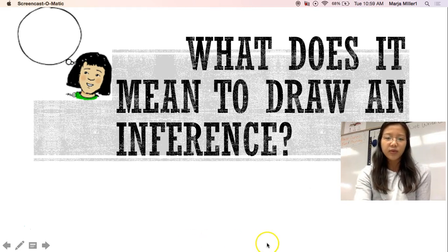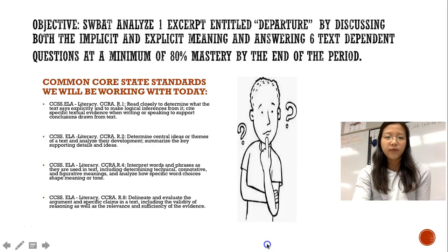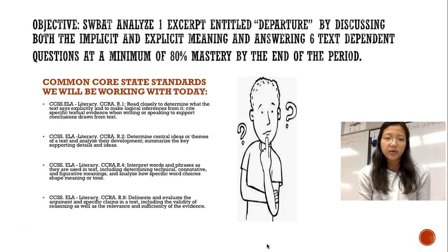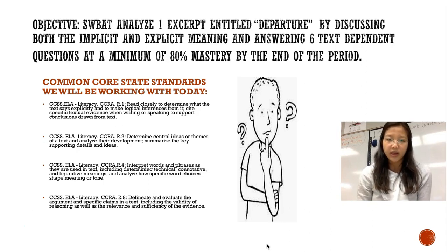Moving on, today we will be working with four different common core standards, and those four common core standards are related to reading. We will be able to find implicit and explicit meaning in text, and by using those two types of thinking, we will be able to make inferences about what we read.